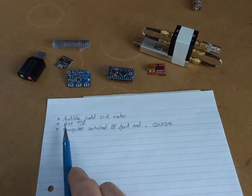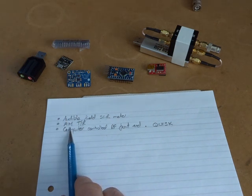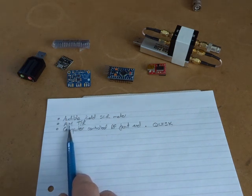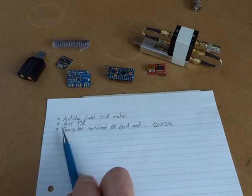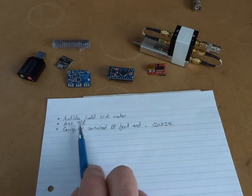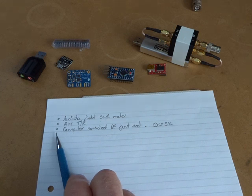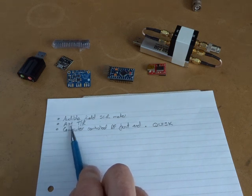Something I've been wanting to build for a while is an AM transceiver. I haven't built one before and have been thinking about ways of producing the amplitude modulation. For example, potentially looking at a dual gate MOSFET type arrangement. There's some AM nets here in New Zealand, so it would be quite nice to participate in those.